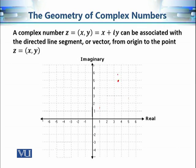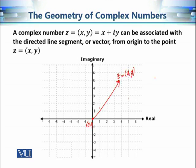To understand this, we can associate a complex number in the plane with a vector. Given a complex number z equal to (x, y), we can associate a vector to this complex number. That vector always has its tail at the origin and its head at the complex number z. Now we have associated a complex number with a vector, and we can ask: what is the relationship between the addition of complex numbers and the addition of two vectors?